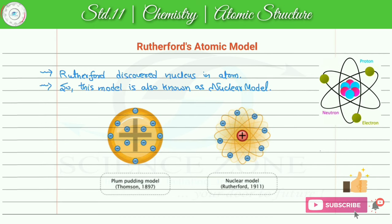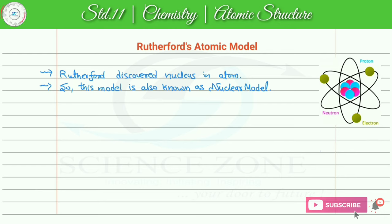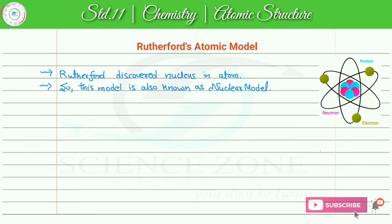In Thomson's model, electrons were static — there was no movement. But in Rutherford's model, electrons actually rotate around the nucleus. This is compared to planets revolving around the sun in the solar system: the nucleus is the center, like the sun, and electrons are like the planets. Because of this, Rutherford's model is also called the planetary model of the atom.